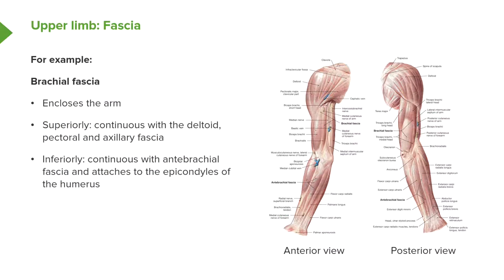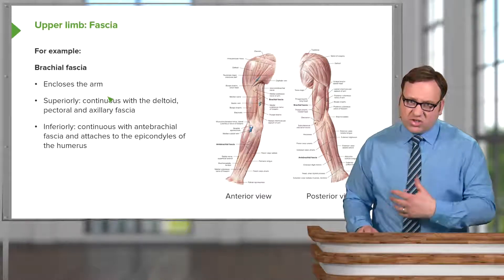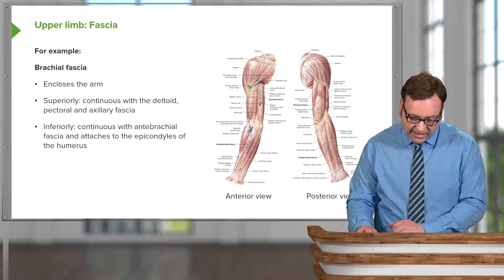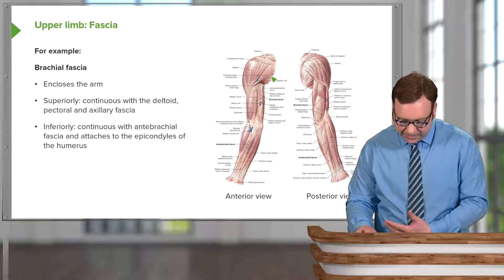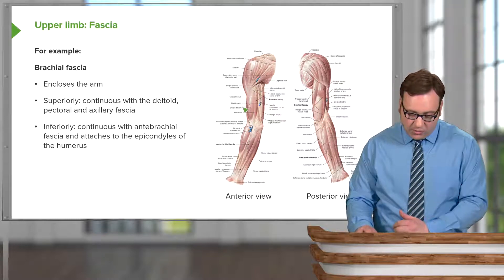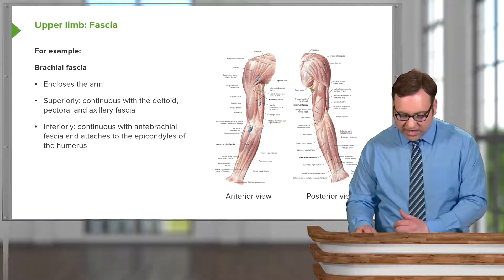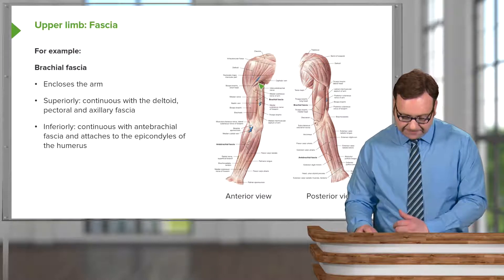We're going to look at an example of the fascia — specifically what's known as the brachial fascia. We can see it here anteriorly and posteriorly, enclosing the musculature of the arm like a tight cuff. It is continuous superiorly with fascia covering the deltoid, the pectoral muscles, and fascia lining the axilla. So this deep fascia is continuous across the entire upper limb; we can see the brachial fascia anteriorly and posteriorly, continuous with the deltoid fascia, axillary fascia, and pectoral fascia.